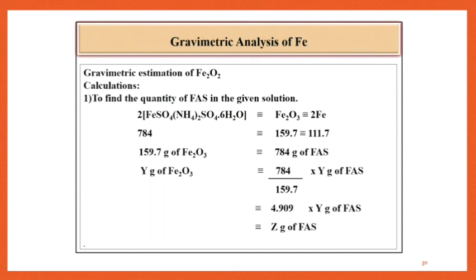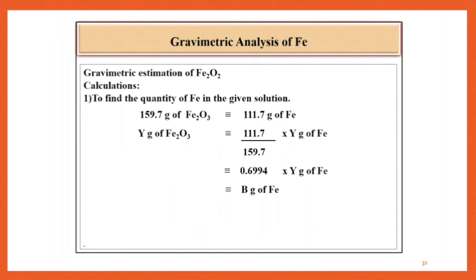So Y gram of Fe2O3 corresponds to 784 divided by 159.7 into Y gram of FAS. That is 4.909 multiplied by Y equal to Z gram of FAS.